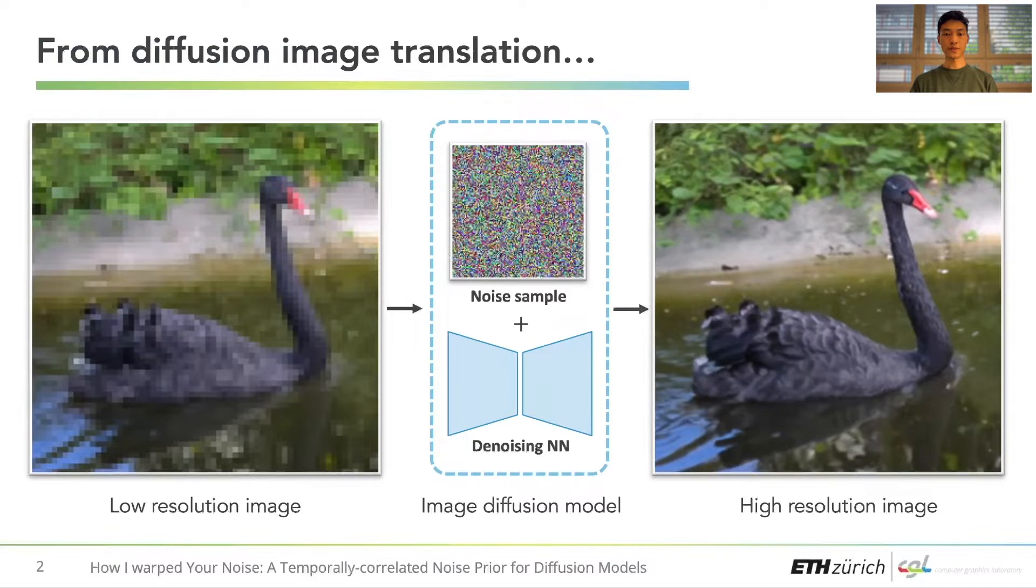Consider the task of image super-resolution with diffusion models. Existing methods are able to obtain impressive results by taking as input low-resolution images combined with one or more Gaussian noise samples.